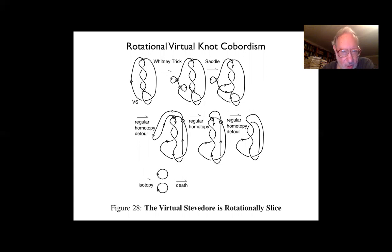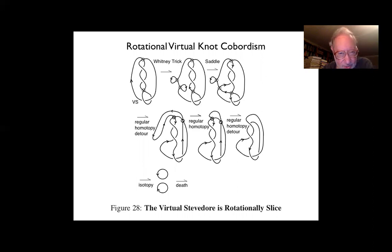Another aspect of rotational virtual knot theory is cobordism. Here is the virtual stevedore's knot. I wish to go through an oriented saddle point, and in order to do that I put in a pair of canceling curls using the Whitney trick. Now I have the curl at which I wish to do my saddle point, and I perform the saddle point.